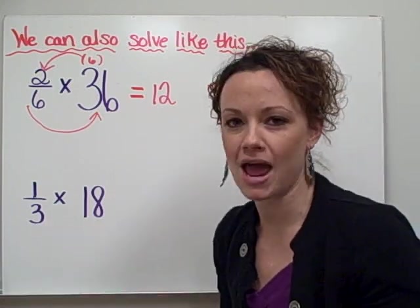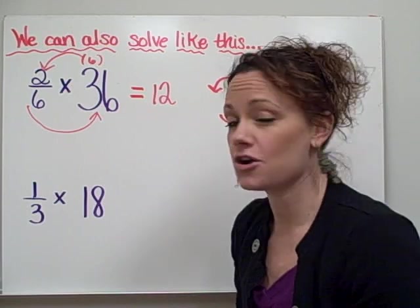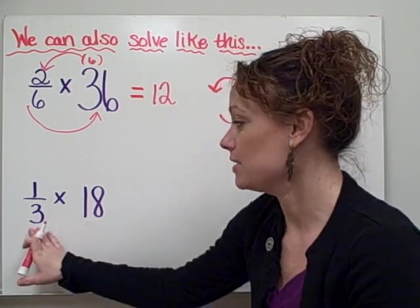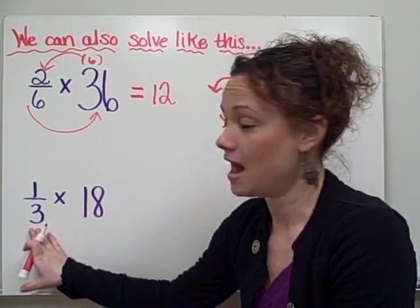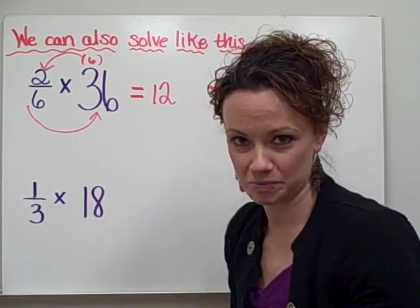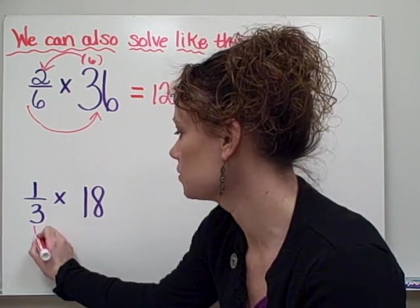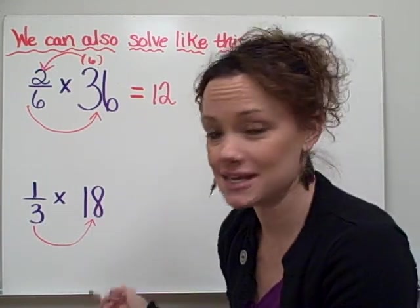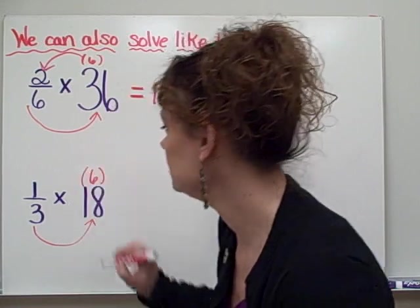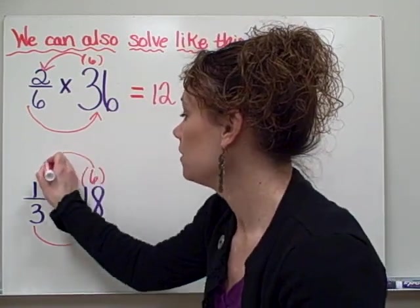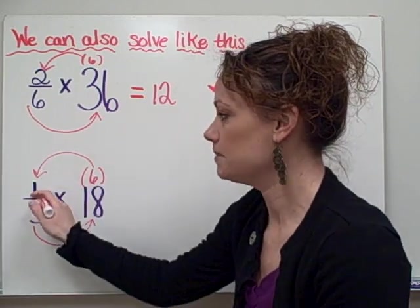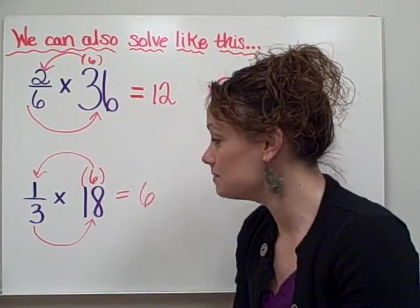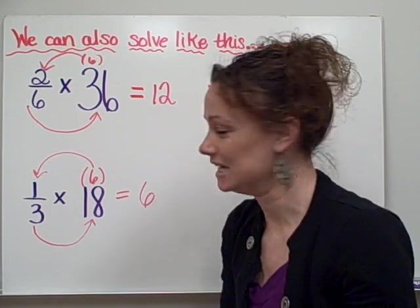So let's try that same circular strategy with this example down here. 1 third of 18. Now what this means is I have 18 of something. I'm breaking it down into 3 equal groups, and I'm eating or using 1 of those groups. So let's try the problem using our circular motion. I ask myself, how many times does 3 go into 18? And it goes in 6 times, so I write that number in parentheses right on top. And then I complete my circle, multiplying 6 times my numerator, which is 1. 6 times 1 equals 6. So 1 third times 18, or 1 third of 18 equals 6.